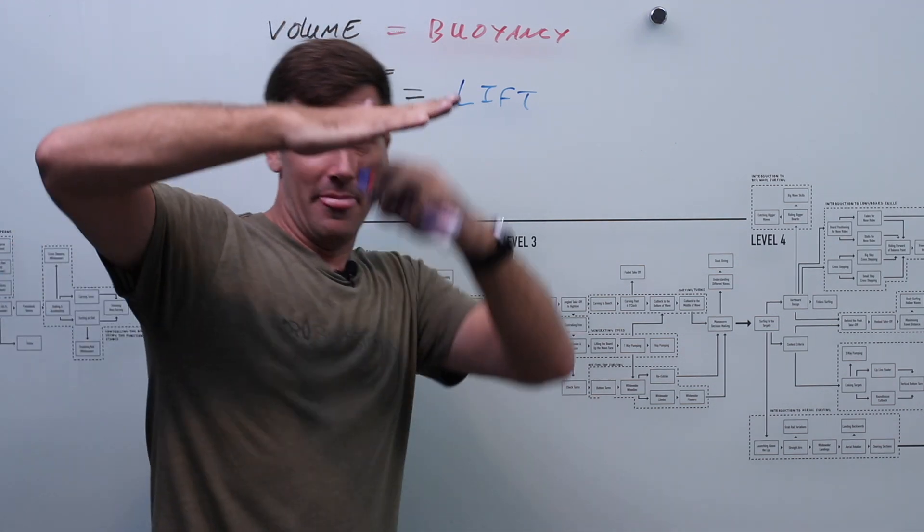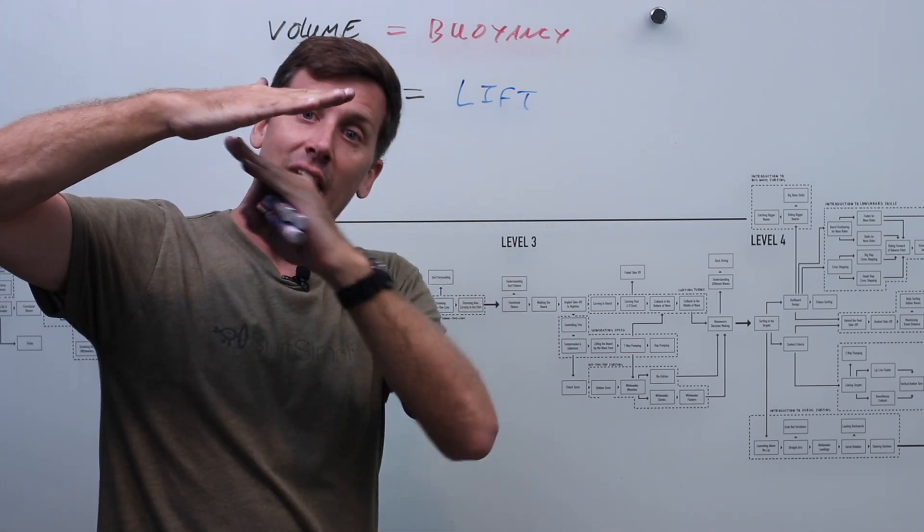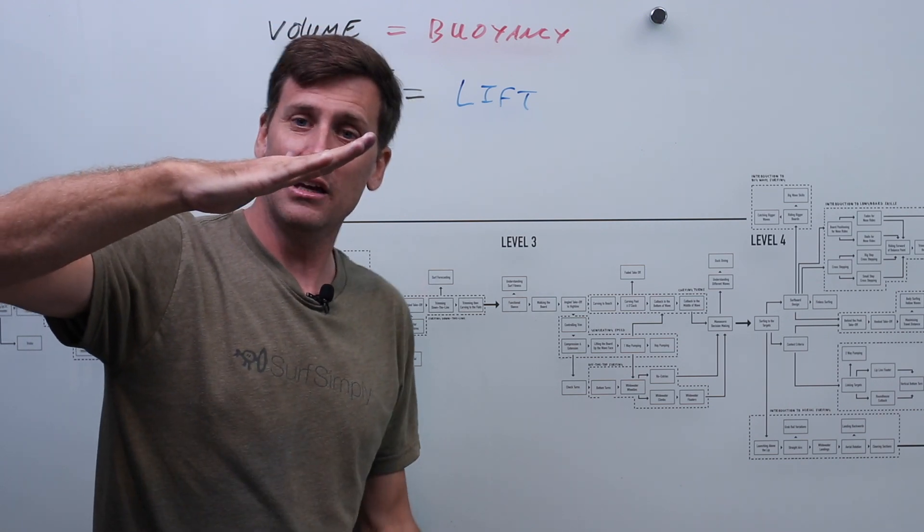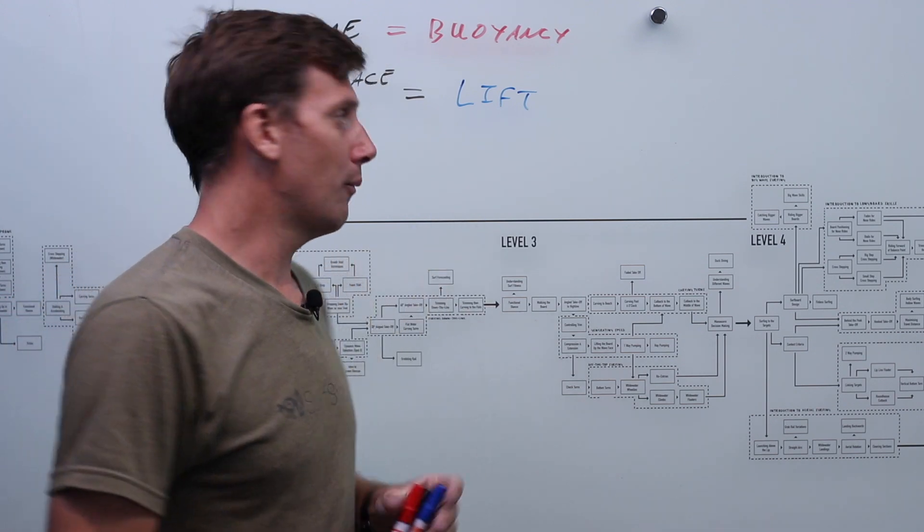Okay. As we maybe slow down, okay, and we're moving less quickly, then that small surface area produces less lift, which means the board sinks down into the water, more surface area, therefore more lift, and it self-balances itself in that way.